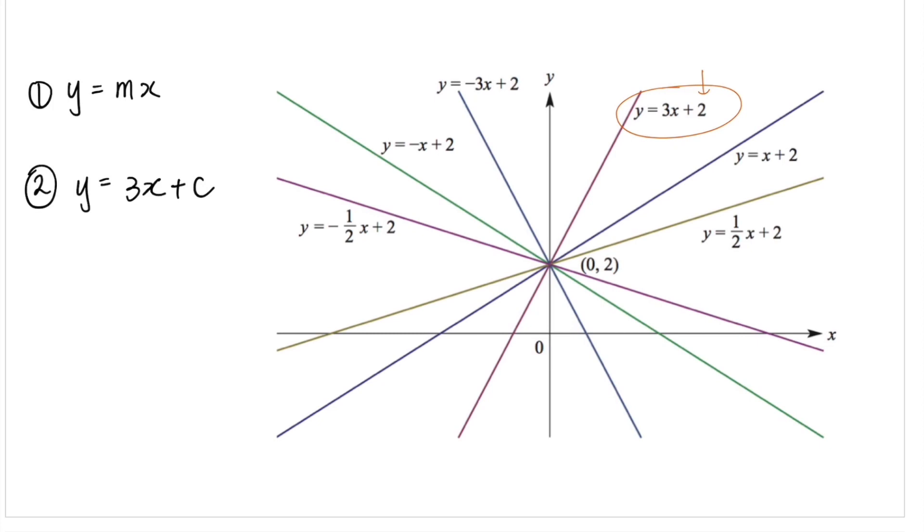Our c value in this case is 2, because that's where the line intersects the y-axis. The third family is y equals mx plus 2. The gradient of the line varies in this case. These are straight lines with y-intercept of 2. They all have the same y-intercept. These lines only share the same y-intercept with different gradients. They have different steepness.